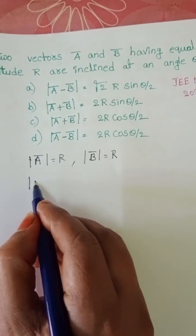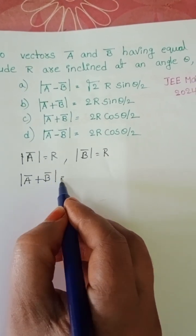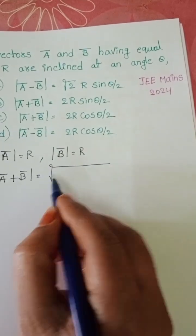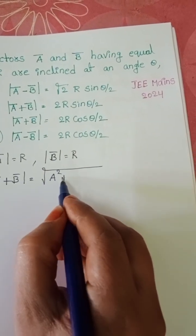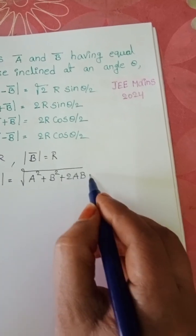First, calculate the resultant of the two vectors. Mod a bar plus b bar equals square root of a square plus b square plus 2ab cos theta.